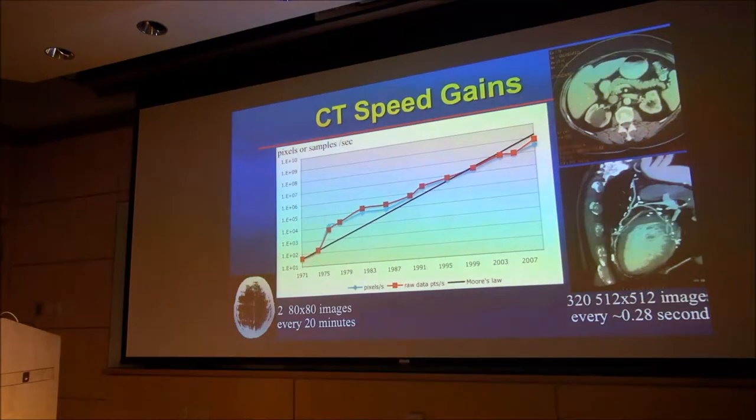These developments have caused the speed of CT to grow tremendously. This is a plot of essentially a measure of the speed of data acquisition as a function of time. Since the first CT scanner was introduced in the early 1970s, you can see more than a seven order of magnitude increase in the speed of CT. The black line is Moore's law, and the speed increase of CT tracks it in terms of the speed of improvement.